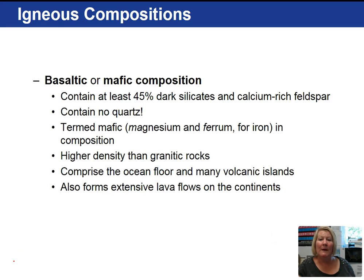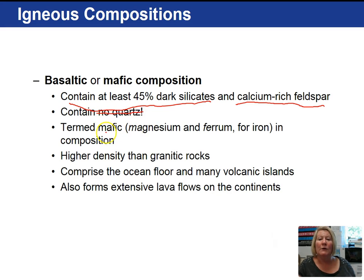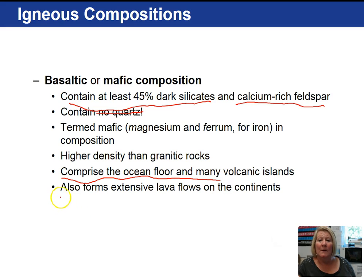Our basaltic or mafic composition magmas contain at least 45% dark silicates and calcium-rich feldspar instead of sodium-rich feldspar — no quartz. The term mafic comes from magnesium and ferrum for iron. They are higher in density because of the iron and magnesium. Basalts are common on the ocean floor and volcanic islands, and we can also find basaltic deposits on the continents.